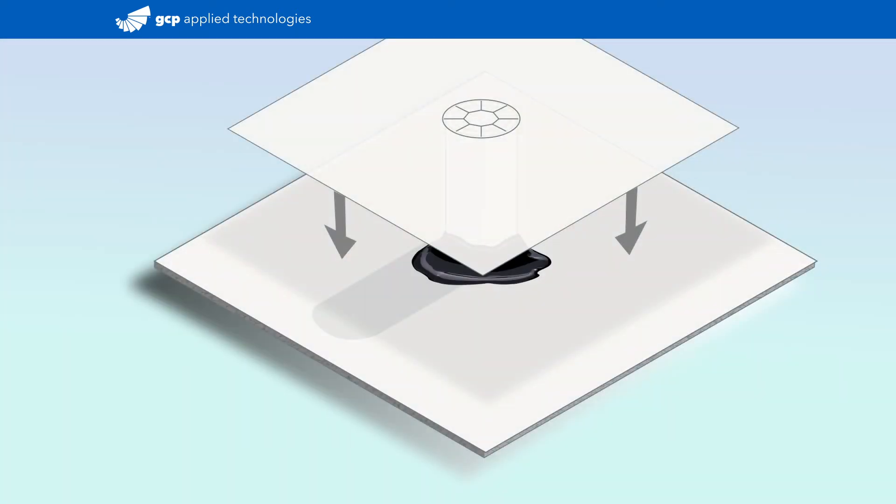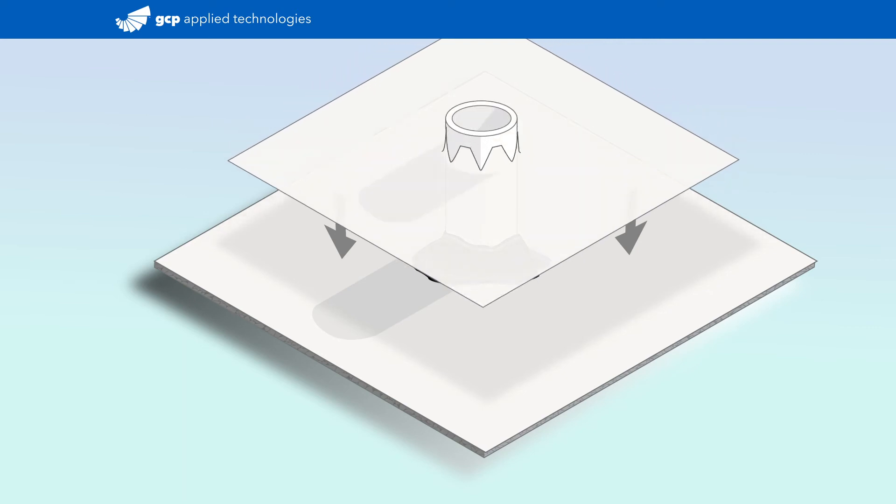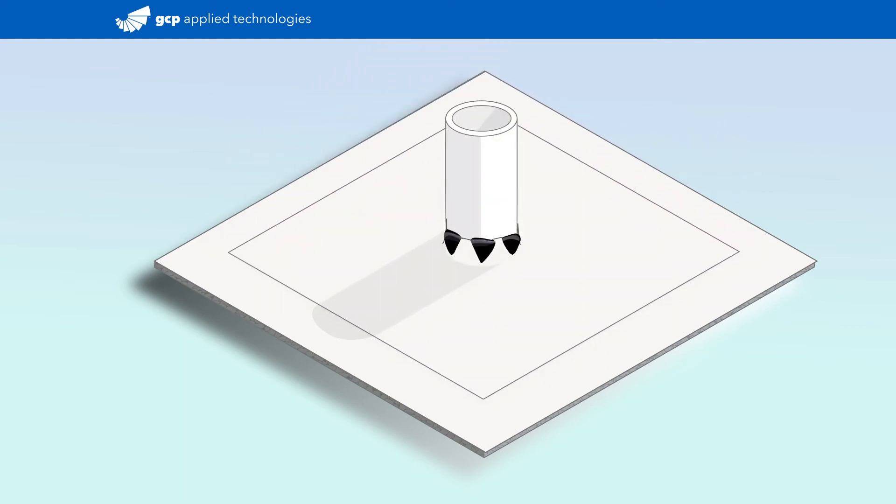Install the previously cut target patch around the penetration by setting it into the uncured Biguthane liquid membrane with sufficient hand pressure to ensure full and continuous contact. You'll see excess liquid membrane from the teeth, ensuring a good seal to the penetration. Strike off any excess Biguthane liquid membrane.